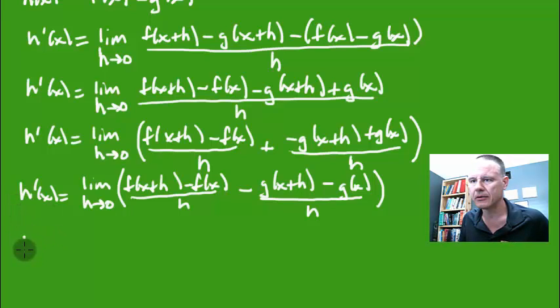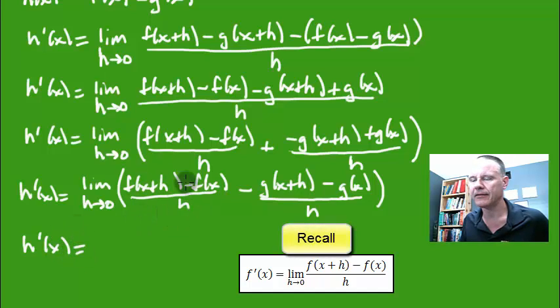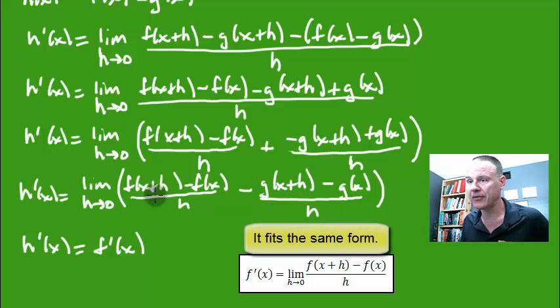Because if you look at the first part, that is the definition of the derivative for the f function. So really this is f prime of x. That's the definition of the derivative. I'm taking the limit of this. And you can see that lines up with the definition of what the derivative of f is. And I'm going to do the same thing here.